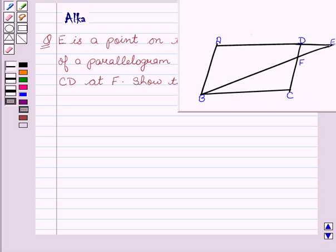According to the question, ABCD is a parallelogram and E is a point on the side AD produced and BE intersects CD at point F. Now let's start with the solution.